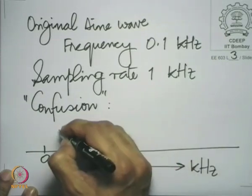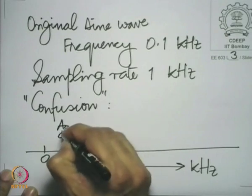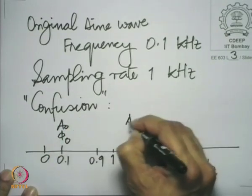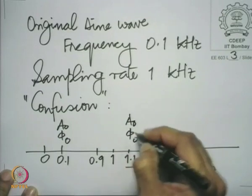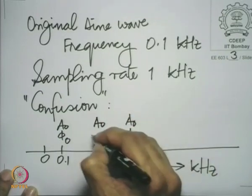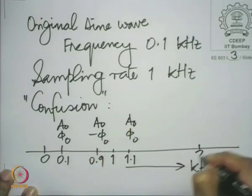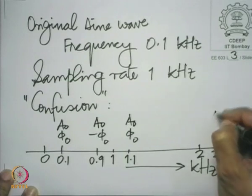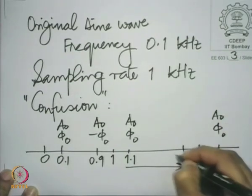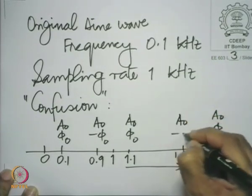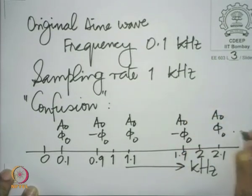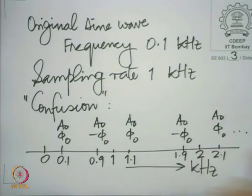If the amplitude is A₀ and the phase φ₀, then the amplitude of the 0.9 kHz component is A₀ with phase φ₀, and the amplitude of the 1.1 kHz component is A₀ with phase −φ₀. At 2.1 kHz the amplitude is A₀ with phase φ₀, and we can continue. At every multiple of the sampling frequency, we have these confusing sine waves which contribute to the same samples.